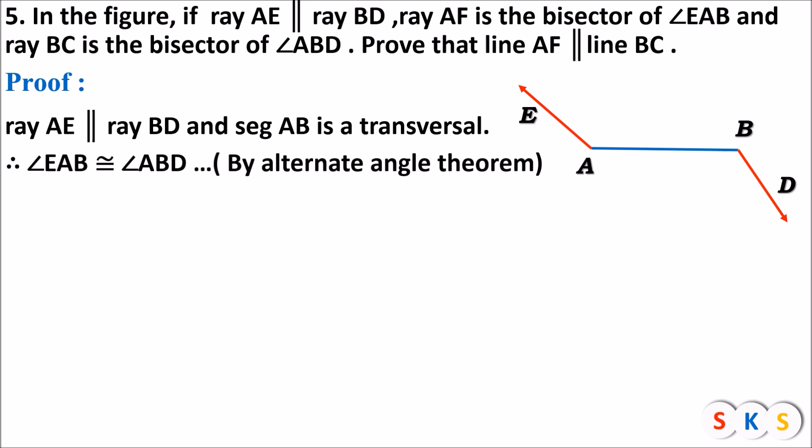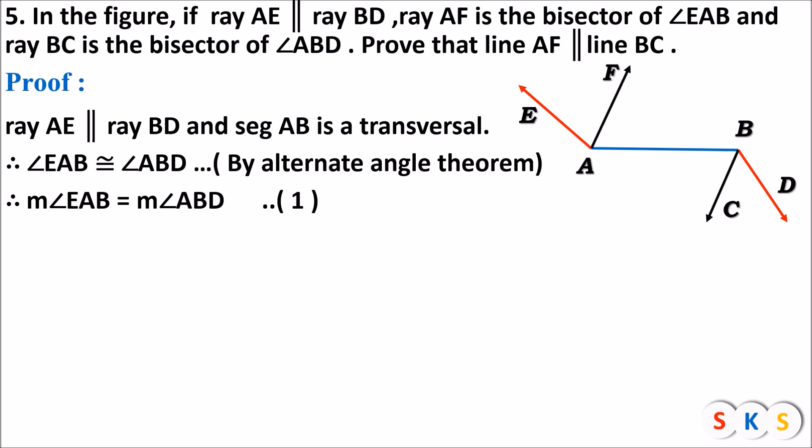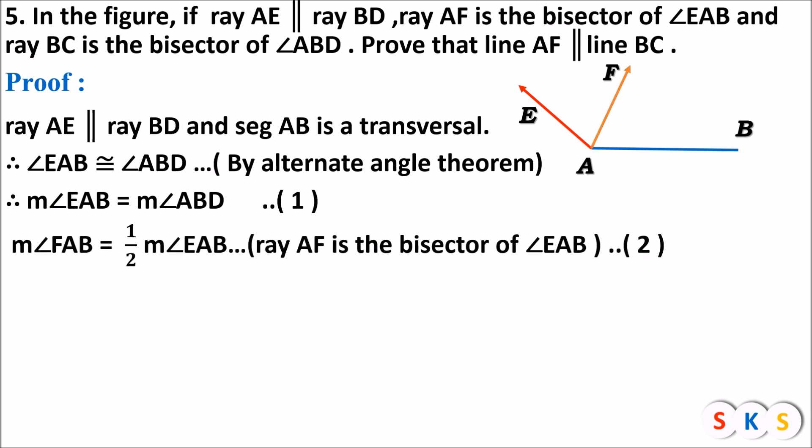Since lines are parallel, alternate angles are congruent. Therefore measure of angle EAB equals measure of angle ABD — this is equation number one. Ray AF is the bisector of angle EAB, therefore angle FAB equals half of angle EAB — equation number two. Since AF bisects angle EAB, it divides it into two equal angles: angle EAF and angle FAB, each equal to half of angle EAB.